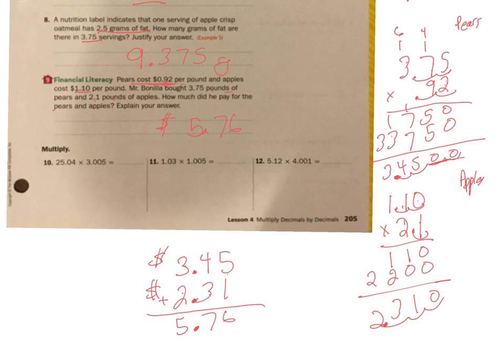These last three, I'm just going to give you the answer. So I want you to have tried them on your own, going through all the steps. And if you didn't get the correct answer, maybe try again. And if you still don't, then come see me and I'll help you work through them, okay? So number 10 is 75.2452. Number 11 is 1.03515. And number 12 is 20.48512. All right. You have any questions? Let me know.